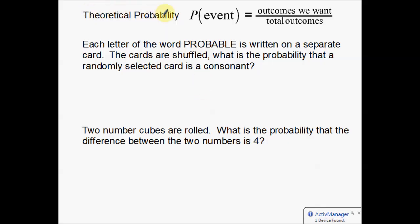Today we're going to talk about theoretical probability. Theoretical probability is the probability that an event will happen. These probabilities range from 0 to 1, where 0 means the event is not going to happen, and 1 means there's a 100% chance that it's going to happen.